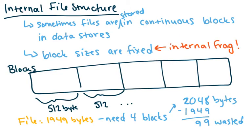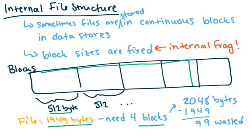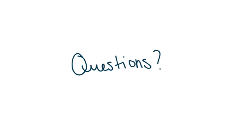Internal file structure will be covered in more detail later. Some things to note: files are sometimes stored in contiguous blocks, and block sizes are always fixed, which can lead to internal fragmentation. For instance, if your file is 1,949 bytes and your block size is 512 bytes, you need four blocks, but the fourth block won't be full — 99 bytes are wasted. We'll talk about different strategies for storing file structure in future videos.